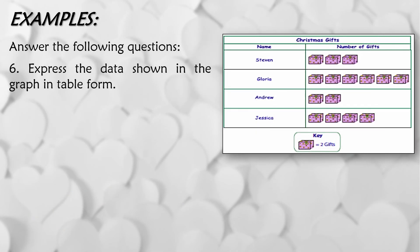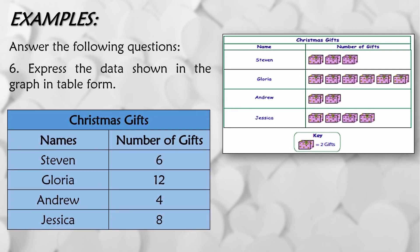Last question, express the data shown in the graph in table form. So maglalagay lang tayo ng dalawang columns since meron tayong dalawang column para sa name. At isang column naman o yung pangalawang column ay sa number of gifts. And then the title is Christmas gifts. Si Stephen ay nakakuha ng 6 since meron siyang tatlong drawings. So 3 times 2 is 6. Gloria is 12. Andrew got 4. And Jessica got 8.